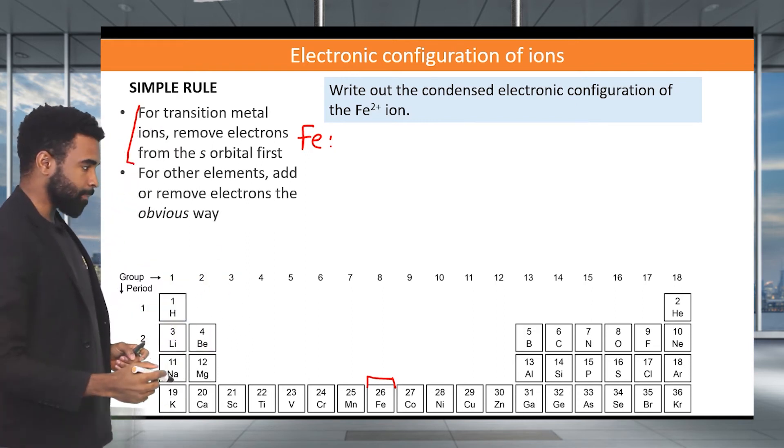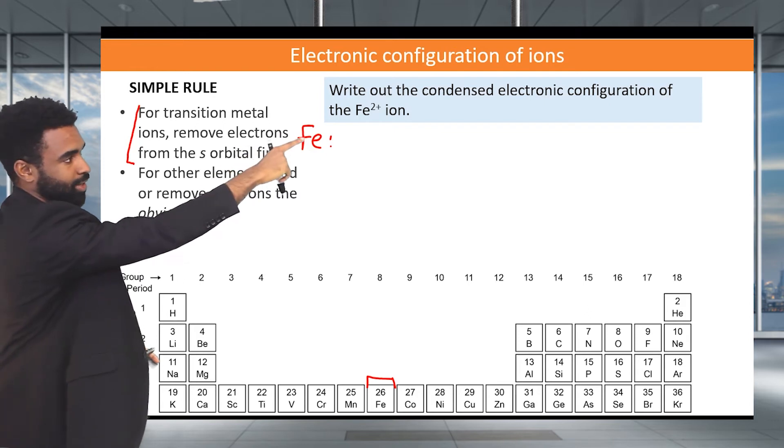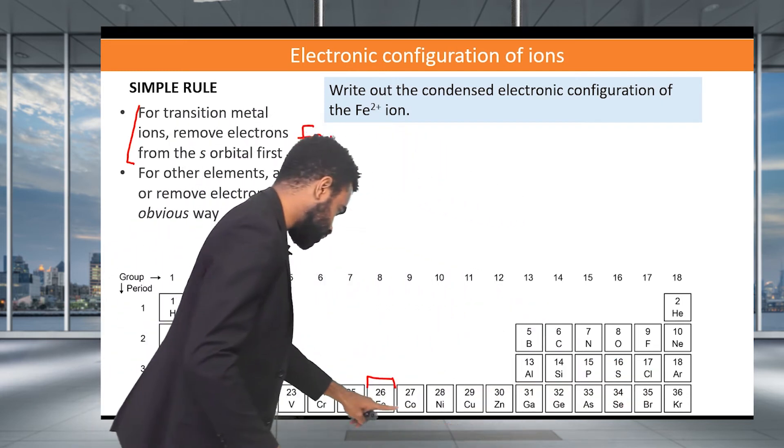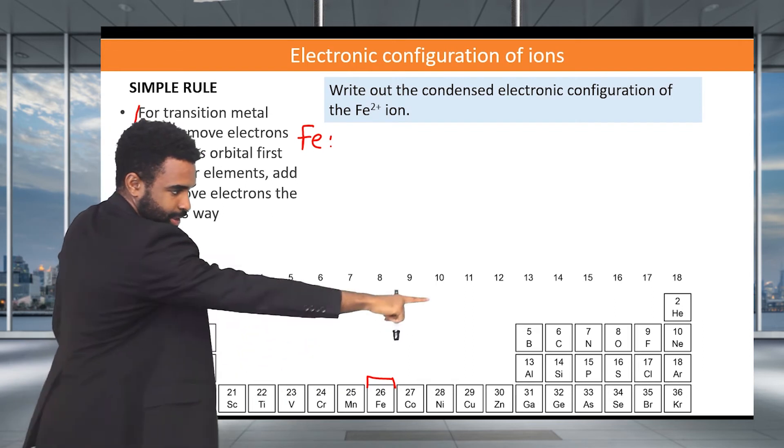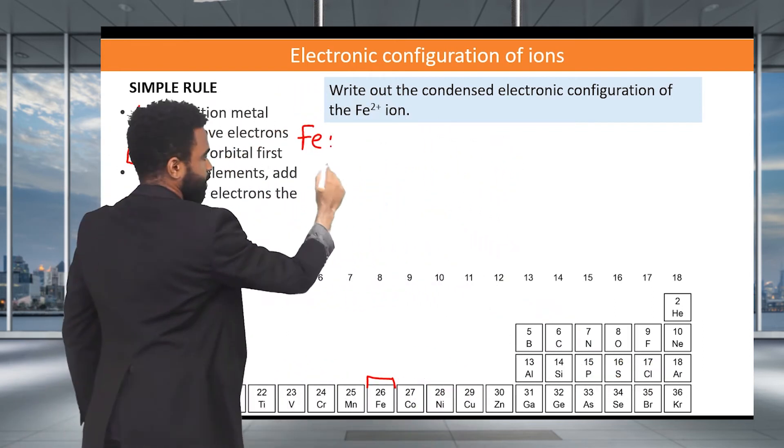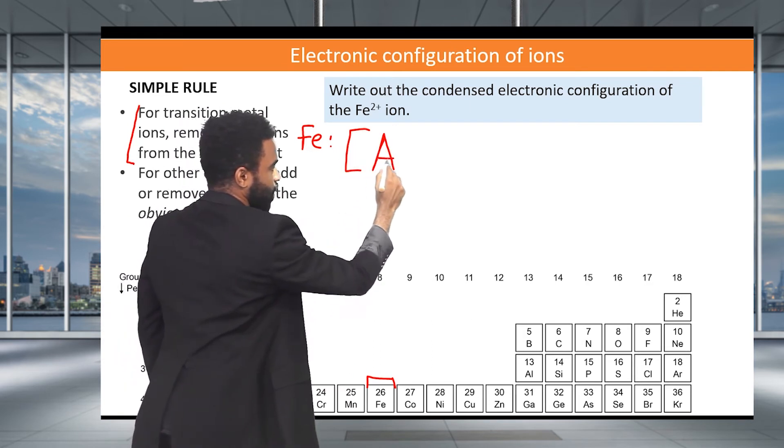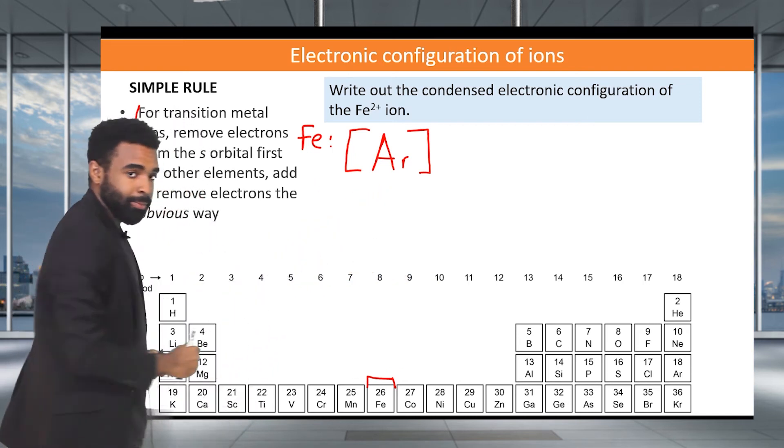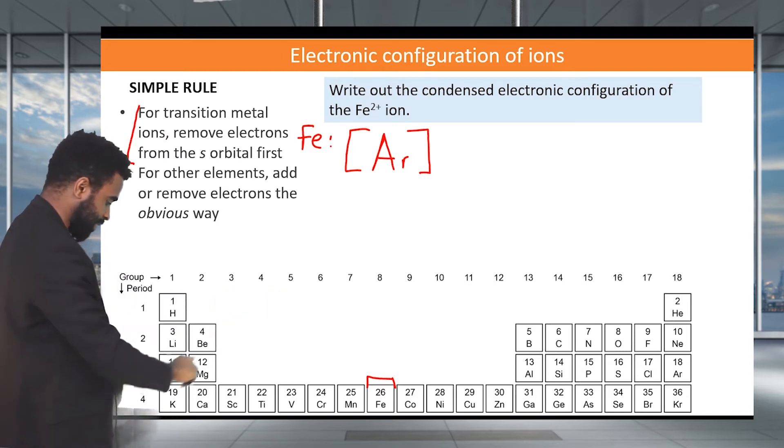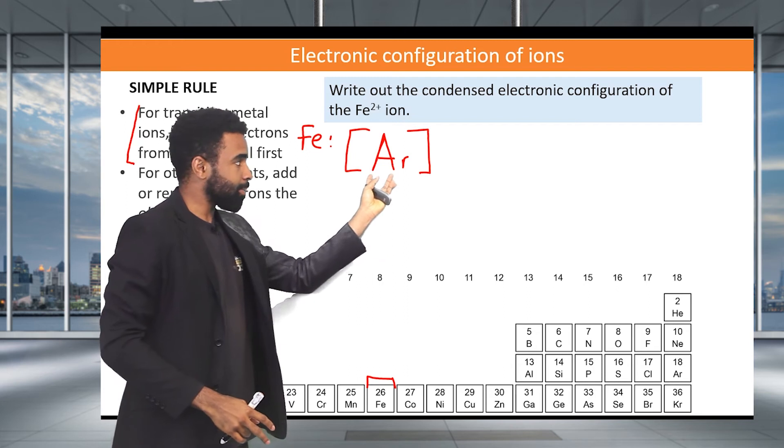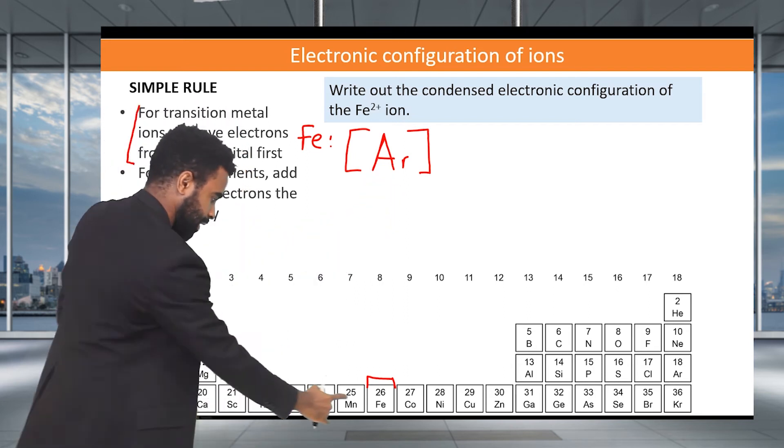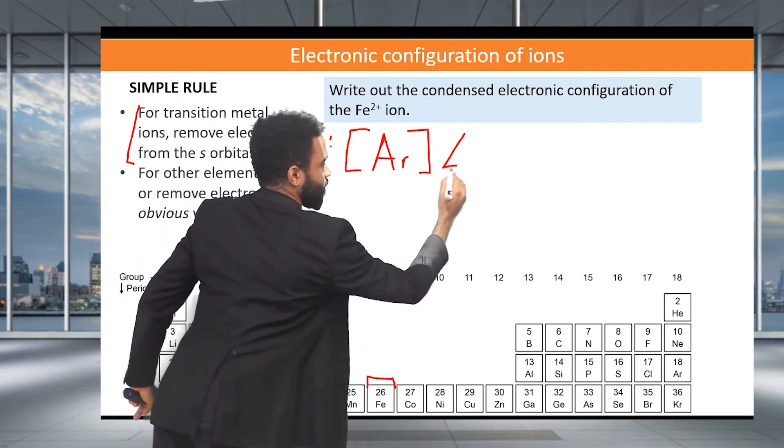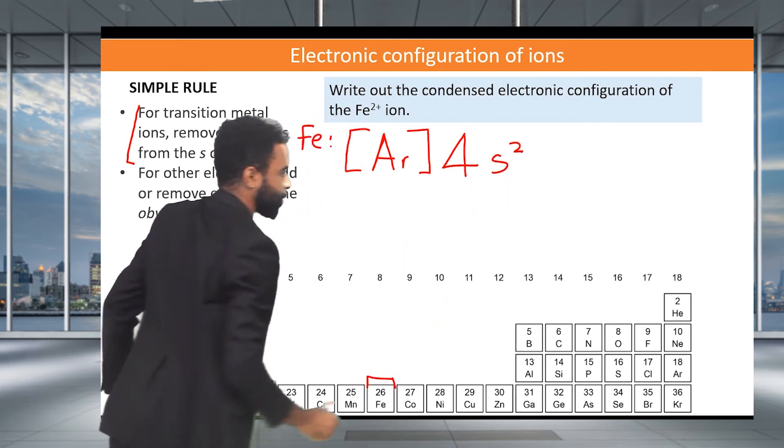So we start with the, since we're doing the condensed electronic configuration, we need to find the previous noble gas, the last noble gas, and that will be here. So if you count backwards from 26 backwards, 19 there, then you get to 18, we see argon. So we start by putting out, putting argon here in square brackets. And therefore we are implying all of the electronic configurations that make up argon there. So the 1s2, 2s2, 2p6, 3s2, 3p6, all of that is implied here by the square brackets. And now we need to get the neutral iron. So what do we need? We need a 4s2 here, right? Because we're in period 4 and the s block, there are two elements, therefore two electrons there.